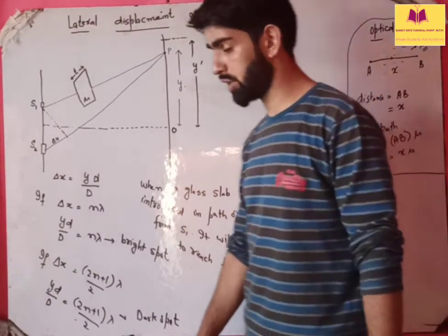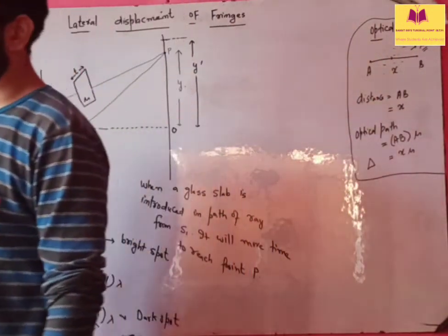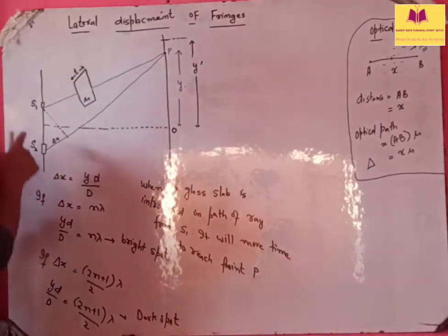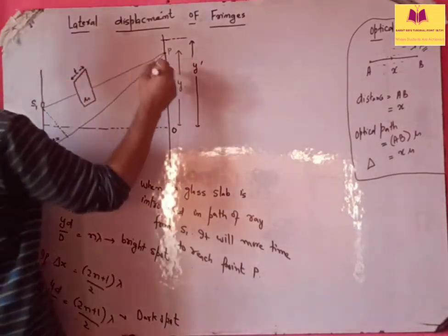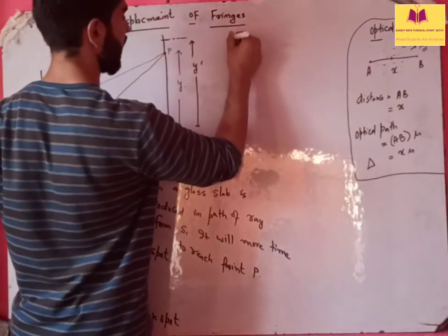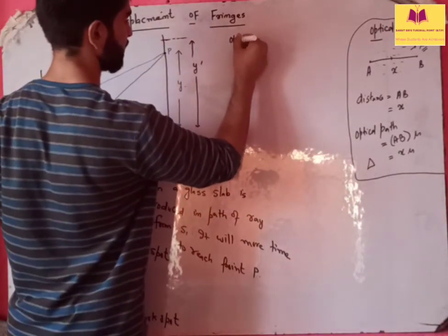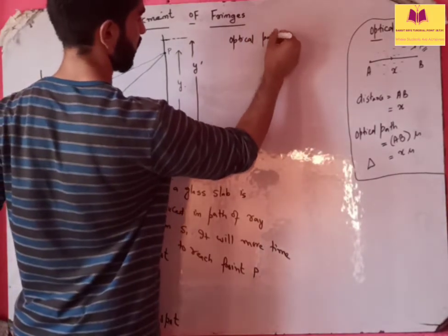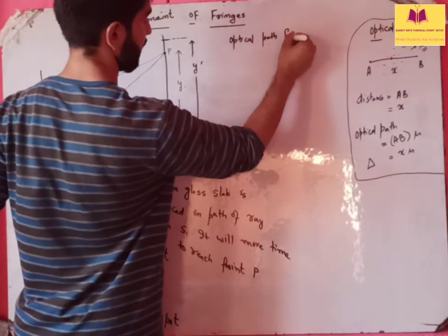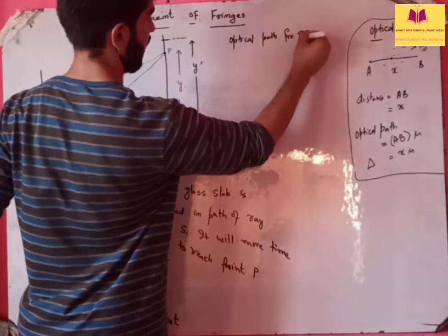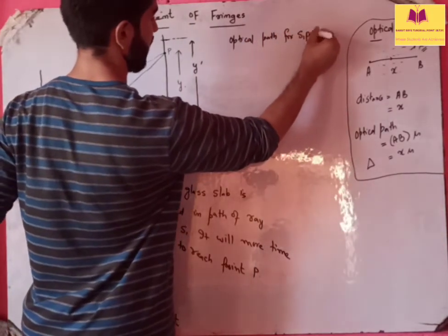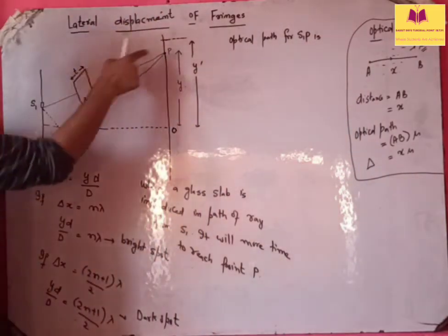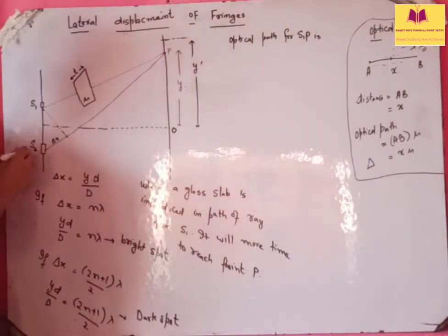So tell me: what is the optical path for the light ray S1P?